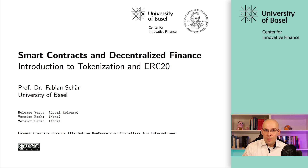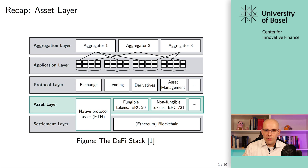Let's get started by quickly looking at the DeFi stack. When we talk about tokenization, we're really on the asset layer. You will get a general introduction to tokenization, where it all came from, and then we will talk about a fungible token standard — the ERC-20 token standard — which is the dominant standard for issuing fungible tokens in the space.